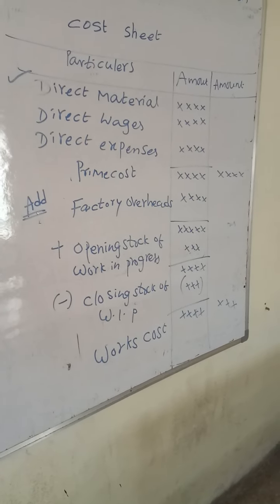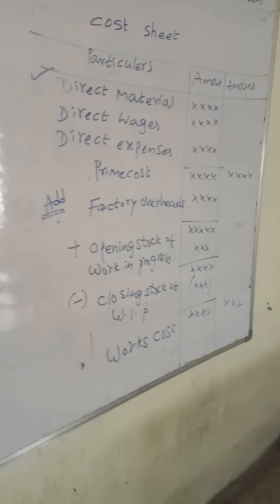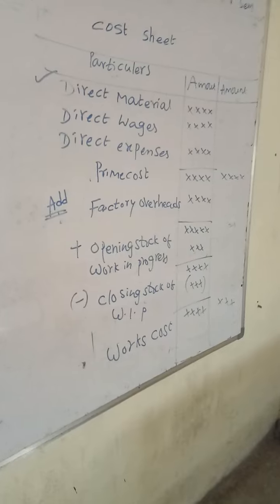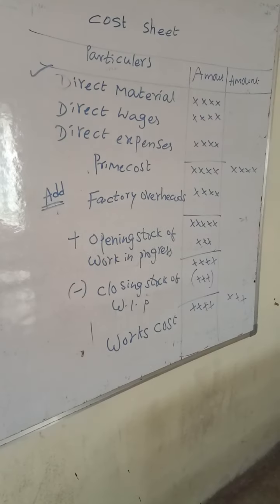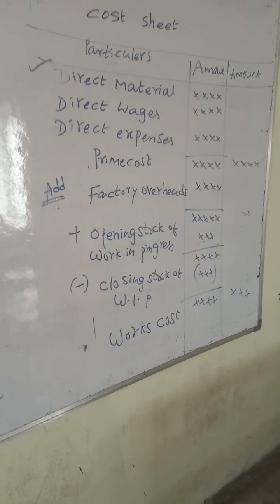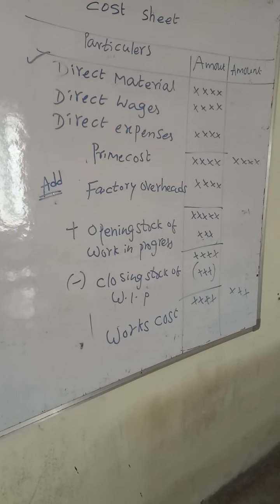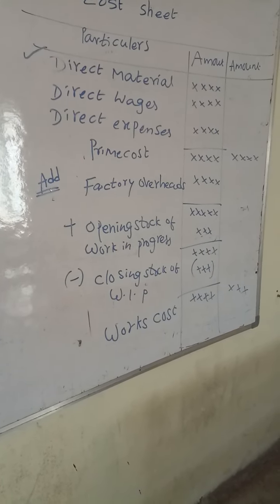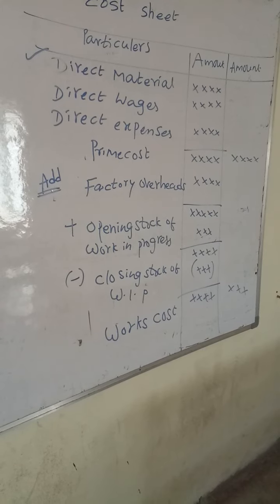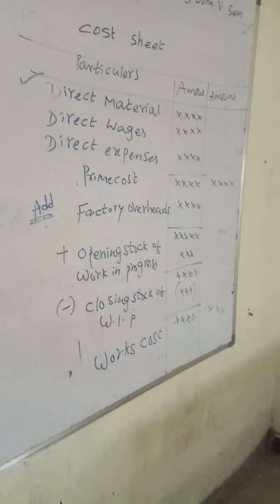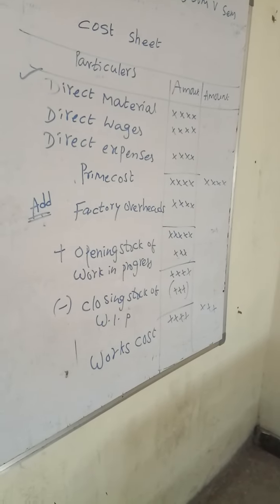Then factory overheads, including sale of scrap. Here, we add opening stock of work in progress and deduct closing stock of work in progress. This gives you works cost. Works cost is also known as factory cost.